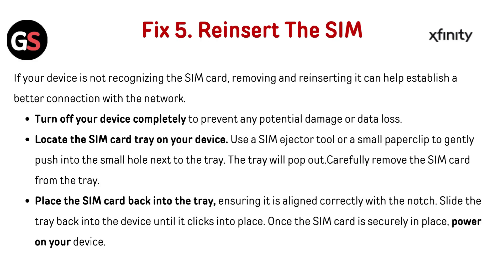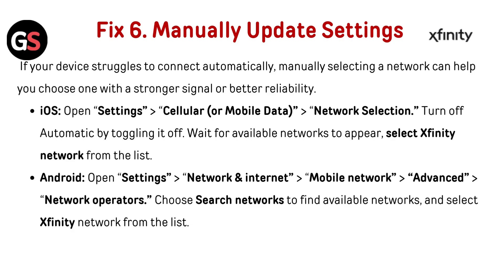Fix 5: Reinsert the SIM. If your device is not recognizing the SIM card, removing and reinserting it can help establish a better connection with the network. Turn off your device completely to prevent damage or data loss. Locate the SIM card tray, use a SIM ejector tool or a small paper clip to gently push into the small hole next to the tray. The tray will pop out — carefully remove the SIM card, place it back ensuring it is aligned correctly with the notch, slide the tray back in until it clicks, then power on your device.